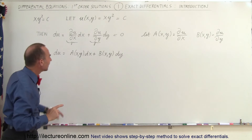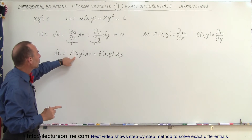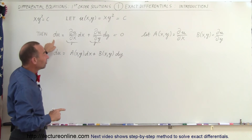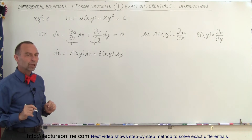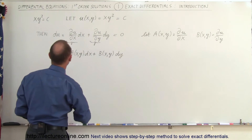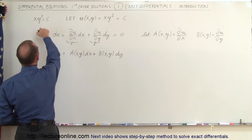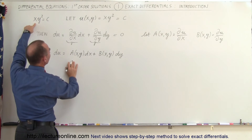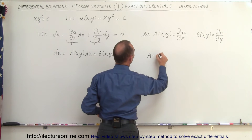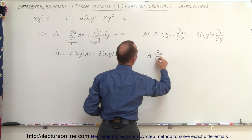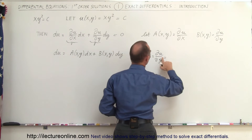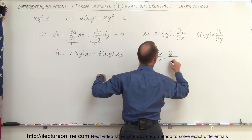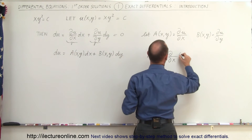Now, if we take the partial of a with respect to y, and the partial of b with respect to x, if this is an exact differential, then those should be equal to one another. So let's go ahead and take the partial of u with respect to x — so a is equal to the partial of u with respect to x — and we're going to take the partial with respect to x of the quantity xy squared.